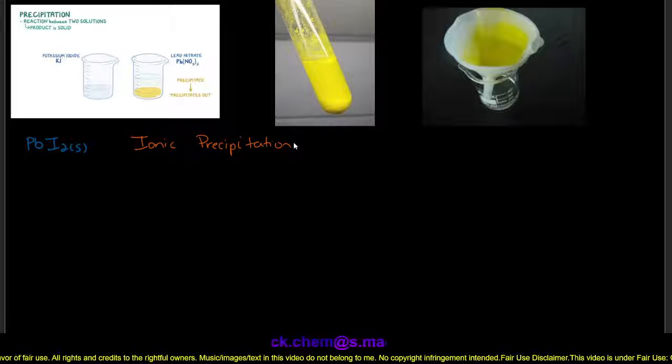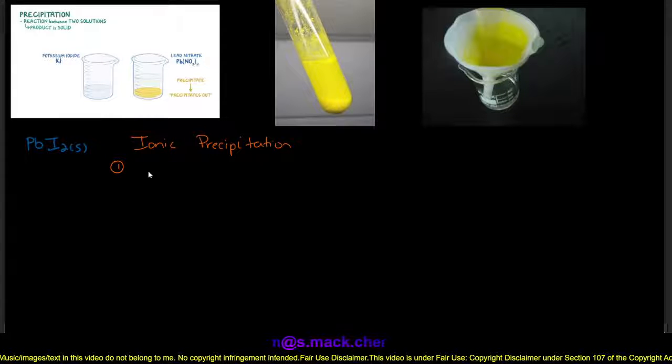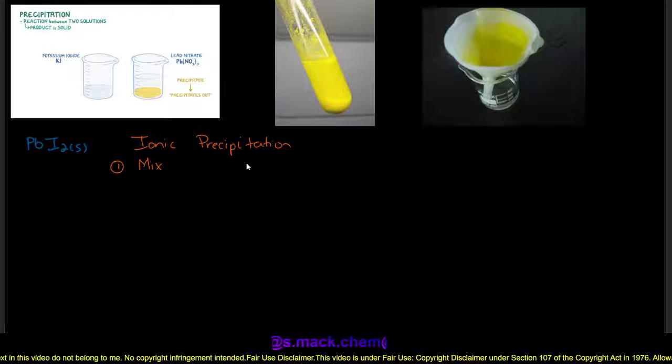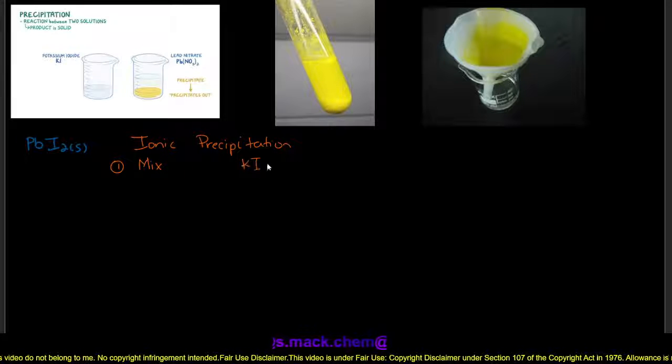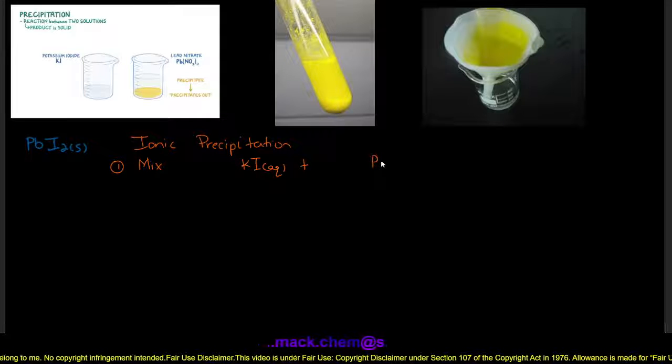In ionic precipitation, in order to form an insoluble salt, we would mix together two solutions of soluble salts. As seen in this diagram, we would mix potassium iodide and lead nitrate.